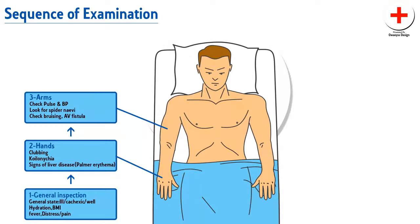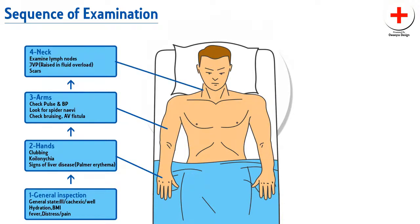Look for spider naevi. Check whether there is any bruising or arteriovenous fistula. Then examine the lymph nodes of the neck. Check JVP — if it is raised, that may suggest fluid overload.